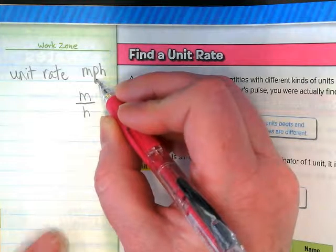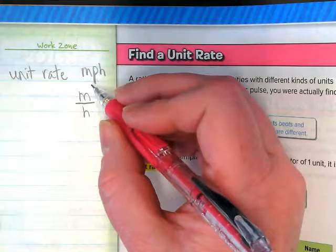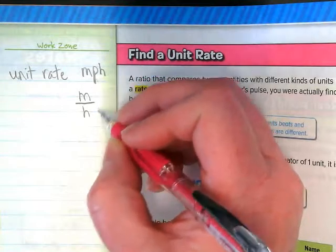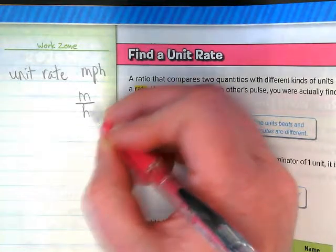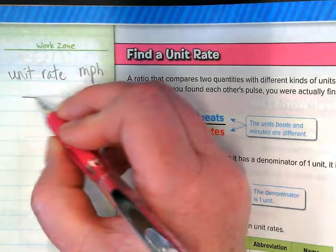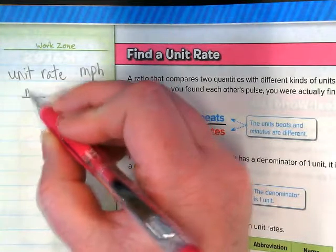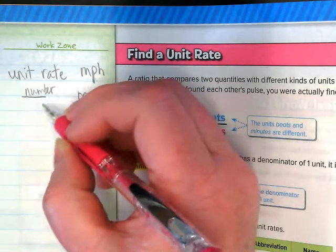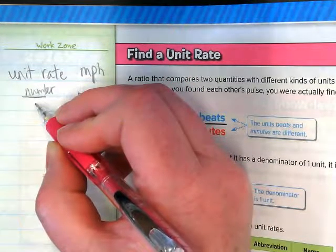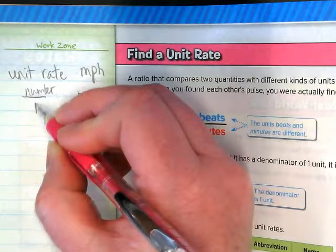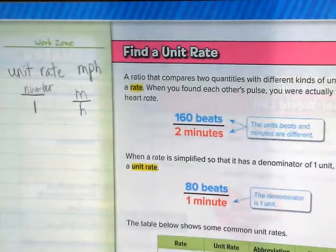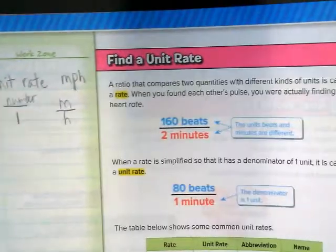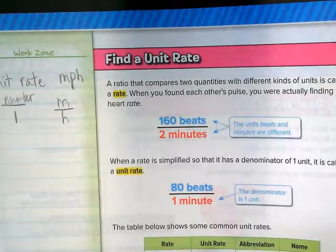The per means one. So when we're trying to figure out any unit rate, the numerator is going to be some number for whatever we're comparing, and the bottom number, the denominator for a unit rate, is always going to be one. So when we're working with these, we're trying to get these down to something over one.